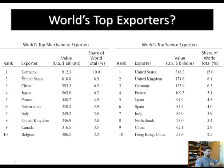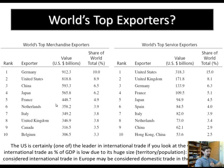Germany is a high-tech country and sells things like cars, chemical products, and other high-tech equipment, so the value of those goods is very high. China is catching up fast — not only in the number of units sold but in the value and sophistication of goods as well. Japan, France, Netherlands, and Canada — mainly natural resources — are also on the list.